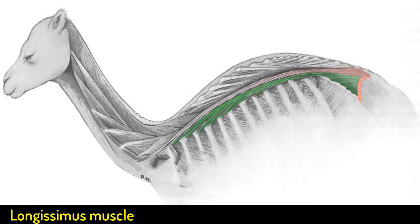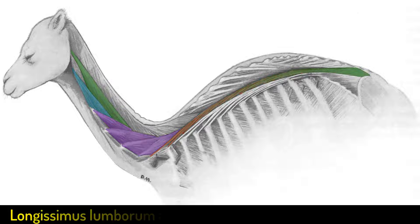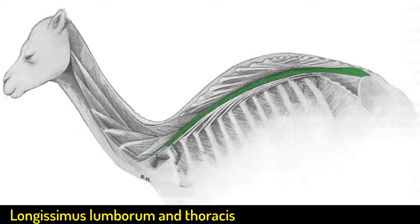Now let's look at this very interesting muscle highlighted in this picture: the longissimus muscle. The longissimus muscle stretches from the sacrum to the skull in the camel and is divided into different divisions. Let's start with the first one, which is the longissimus lumborum and longissimus thoracis — there is no clear division between them.